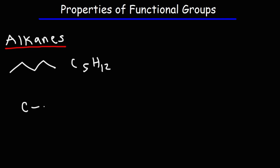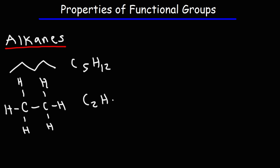Another example is ethane, which has two carbon atoms and six hydrogen atoms, so this is C2H6. Alkanes are saturated molecules — there are no pi bonds, no double bonds, no triple bonds. Therefore, alkanes are unreactive towards addition reactions, such as reactions with hydrogen gas.